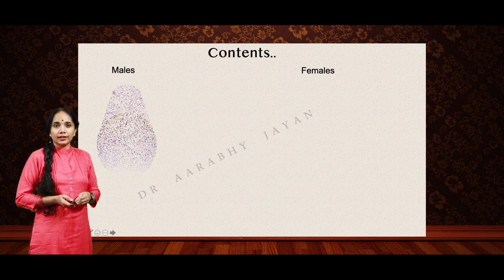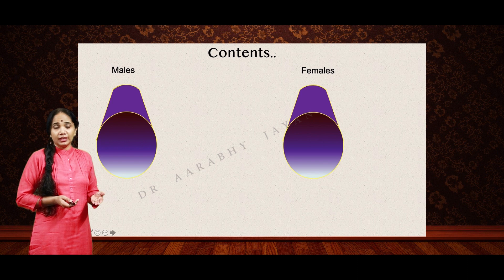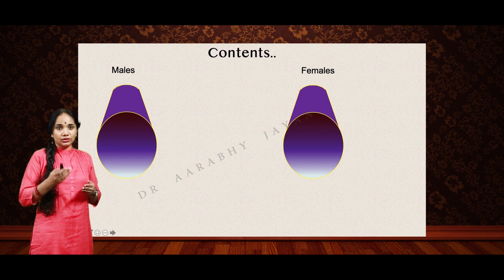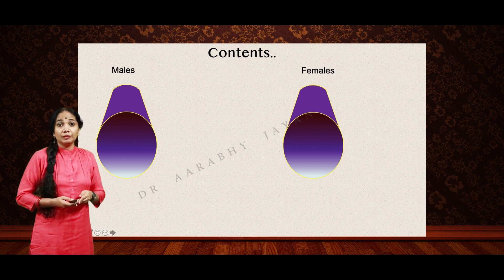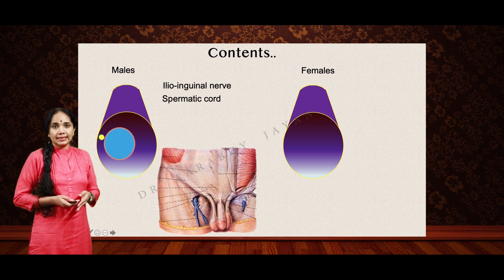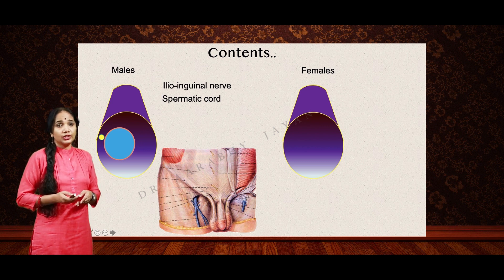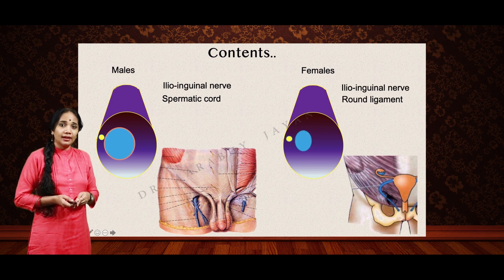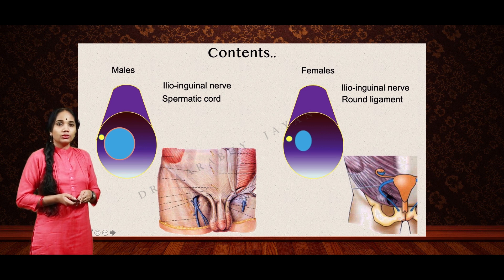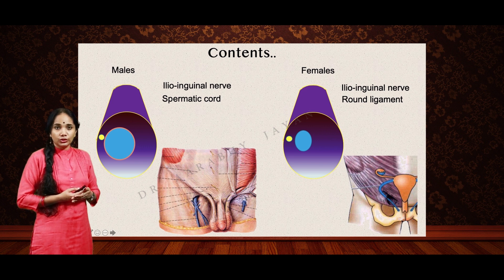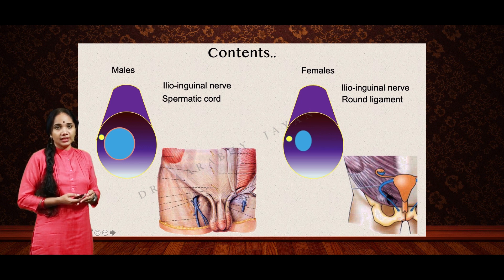There is not much difference between the contents in males and females. This is what our inguinal canal looks like from the medial end — this is a right-sided canal viewed from the pubic symphysis. In males it is the ilioinguinal nerve and the spermatic cord. In females we also have the ilioinguinal nerve, but instead of the spermatic cord we have the round ligament, which gives support to the uterus, while the spermatic cord transmits structures coming and going from the testis.